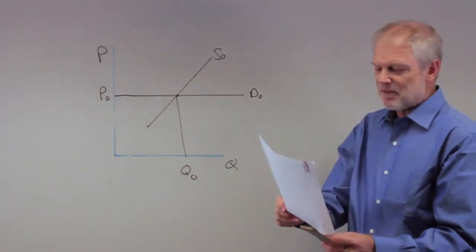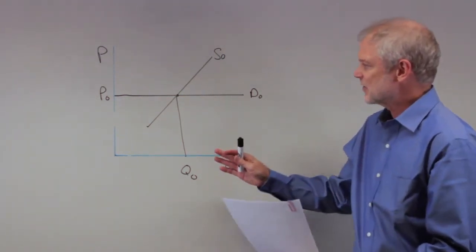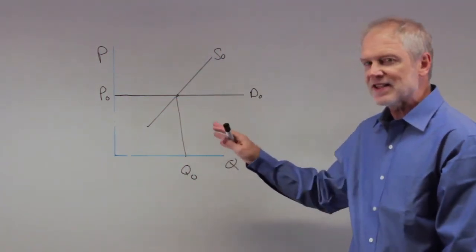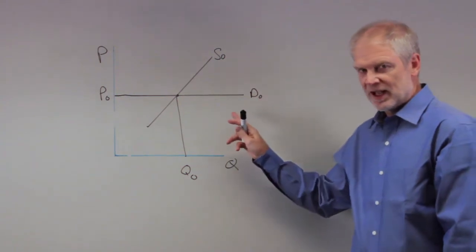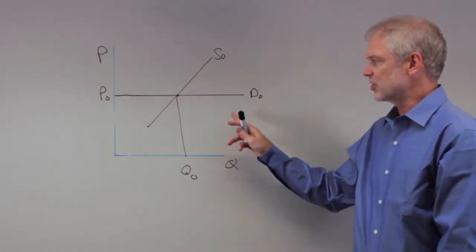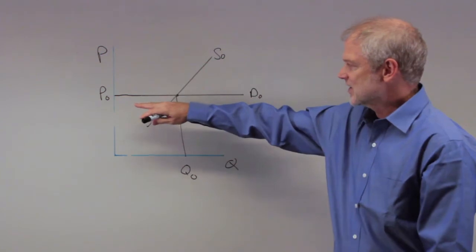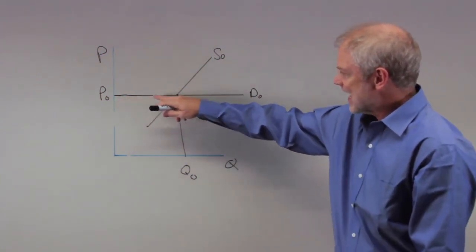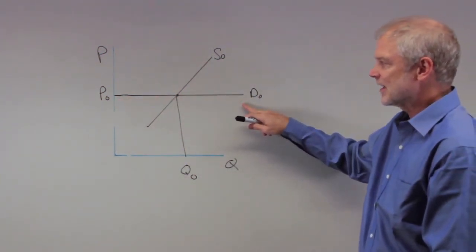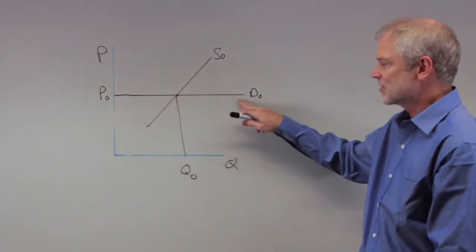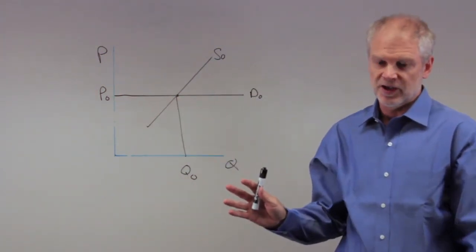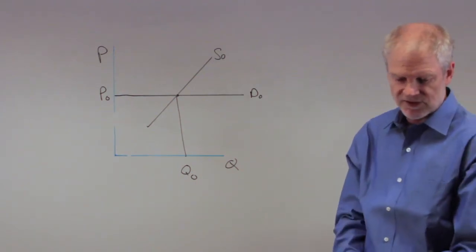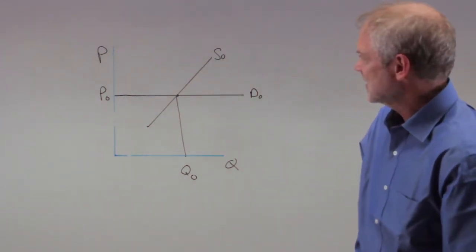I just want to emphasize what this means. A perfectly elastic demand curve, which is going to show up again in Chapter 14 on perfect competition, means that suppliers face a demand curve which is perfectly elastic. If one farmer decides to raise their price, they will lose the entire quantity demanded for their particular product. It's an extremely sensitive situation.